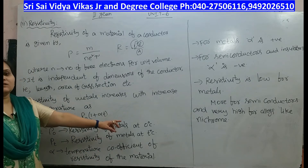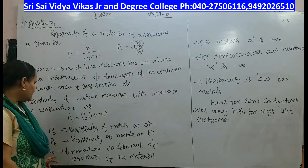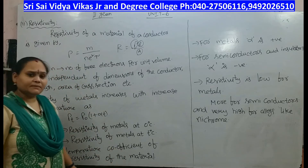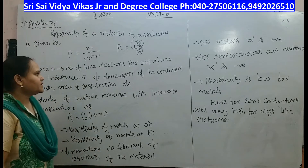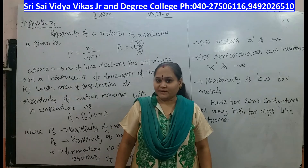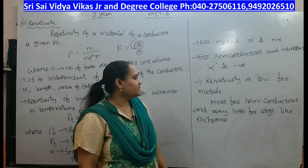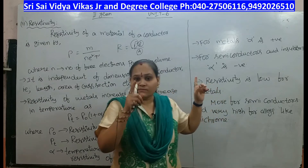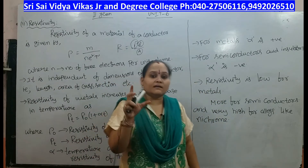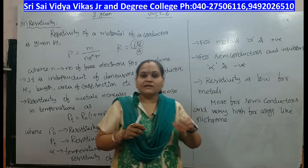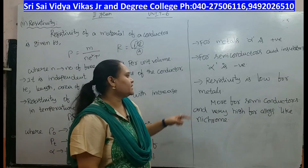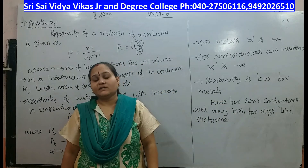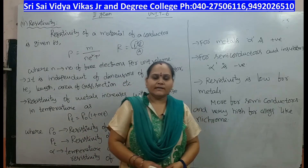Here alpha is the temperature coefficient of resistivity of the material. Alpha is positive for metals and negative for semiconductors and insulators. The resistivity is low for metals, higher for semiconductors, and very high for alloys like Nichrome.